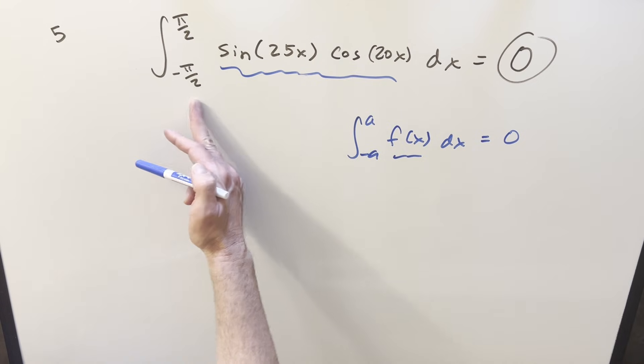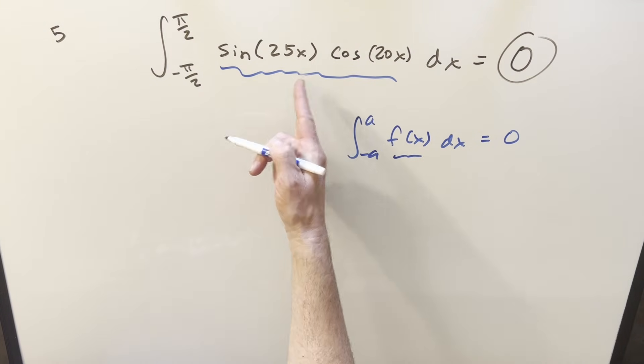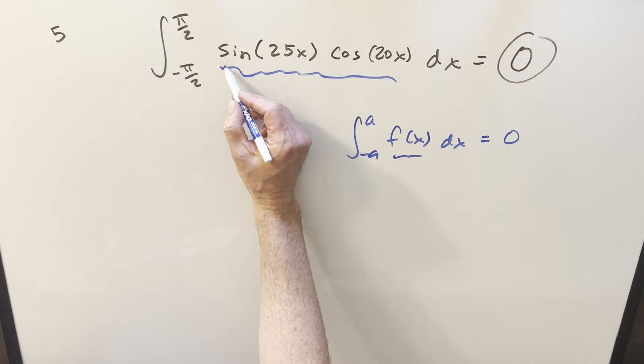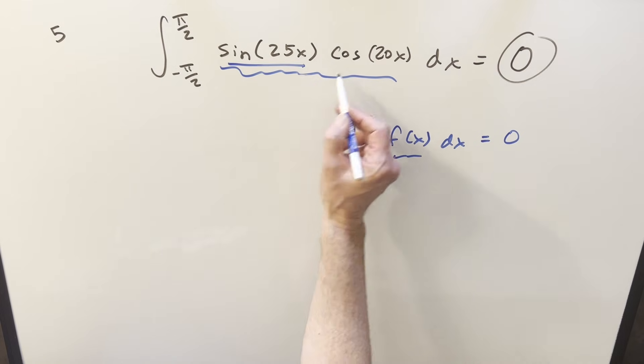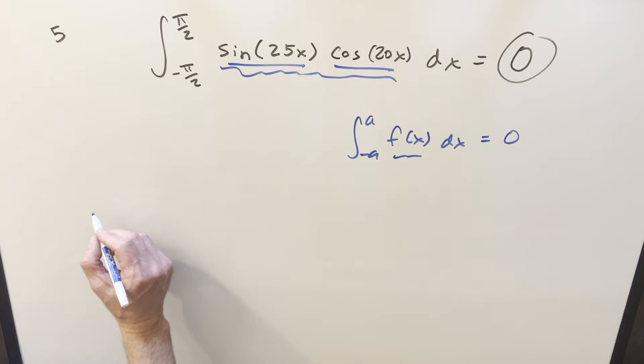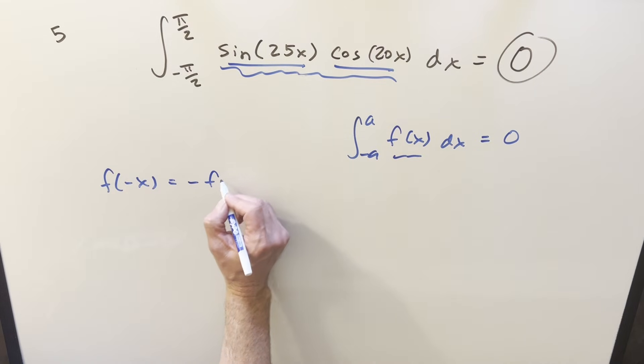Well we definitely have the symmetric bounds, so we have a for our pi over 2 value. For this, the thing to know is that sine is an odd function, cosine is an even function. For an odd function, our definition is that we want f of minus x to be minus f of x.